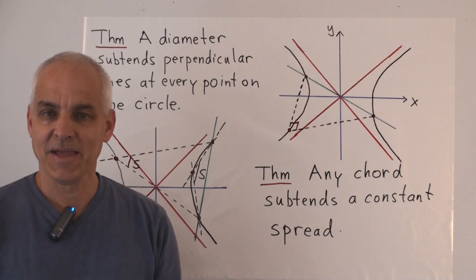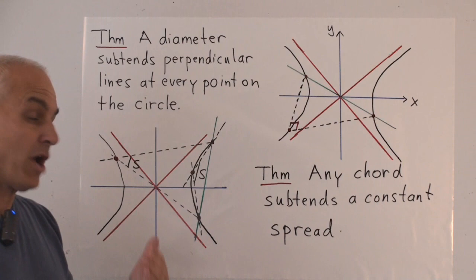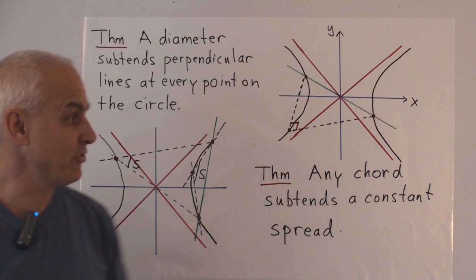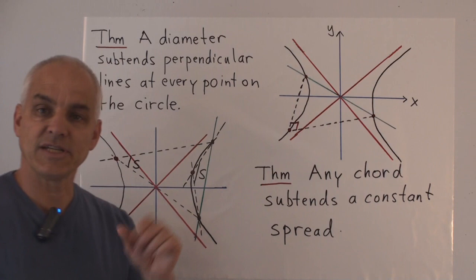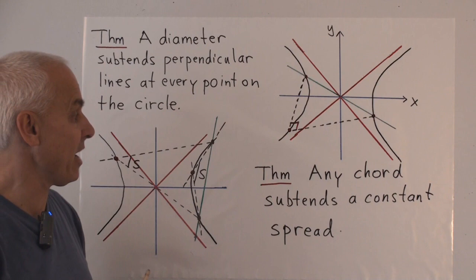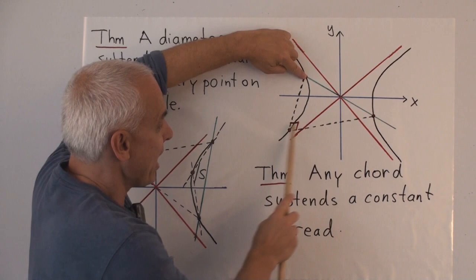In the tenth video in this series, we established some basic fundamental facts about ordinary circles. And a lot of those facts, in fact all of those facts, also hold for these red circles in the red geometry. Here's another fact that we talked about. If you have a circle, in this case a red circle, and any diameter of it, then that diameter subtends a right angle, or a spread of one, at any point on the hyperbola.